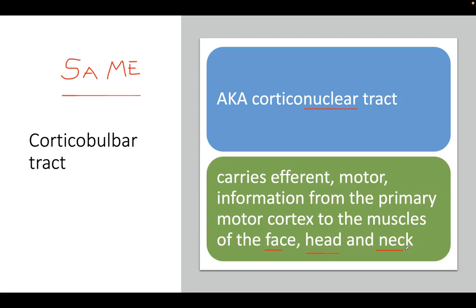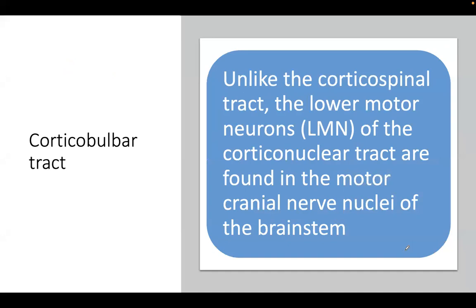Please remember this. One main difference between the corticobulbar tract and the corticospinal tract is that, unlike the corticospinal tract, the lower motor neurons of the corticonuclear tract are found in the motor cranial nerve nuclei, which are located in the brainstem.